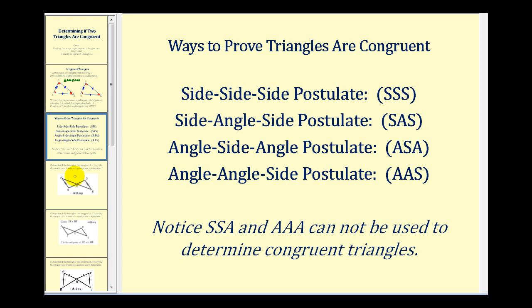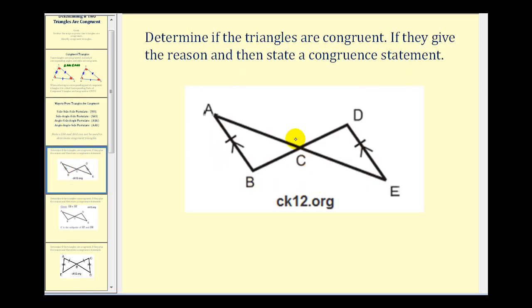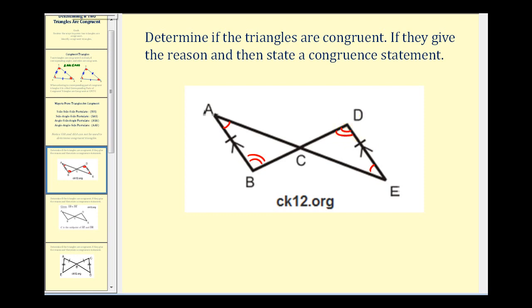Here we're given a sketch and we're going to determine if the triangles are congruent, and if they are, give the reason and then state a congruence statement. Notice that we're given that segment AB is congruent to segment DE and they're also parallel. So if these two segments are parallel, BD and AE would be transversals, and therefore the alternate interior angles would have to be congruent. So angle A is congruent to angle E, and angle B is congruent to angle D.